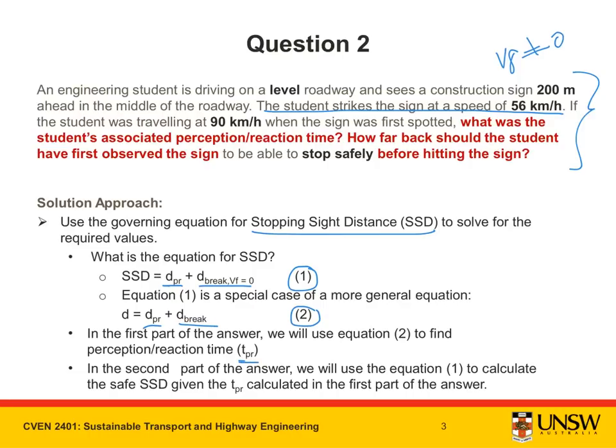This perception reaction time is directly related to the distance in order to perceive and react to an object. In the second part of the answer, we will use equation one to calculate the safe stopping sight distance given the TPR calculated in the first part of the answer.